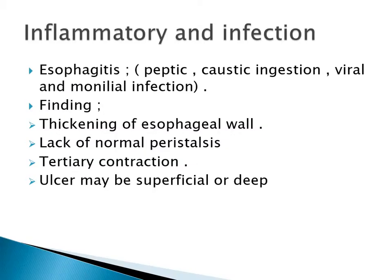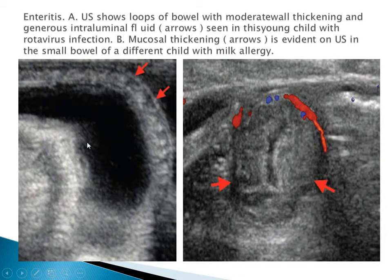Inflammatory and infectious conditions include esophagitis from peptic, caustic, viral, and monilial causes. Findings include thickening of the esophageal wall, lack of normal peristalsis, and tertiary contractions. Ulcers may be superficial or deep. In enteritis, ultrasound shows loops of bowel with moderate wall thickening and intraluminal fluid, with increased vascularity on Doppler ultrasound. Different causes include milk allergy.